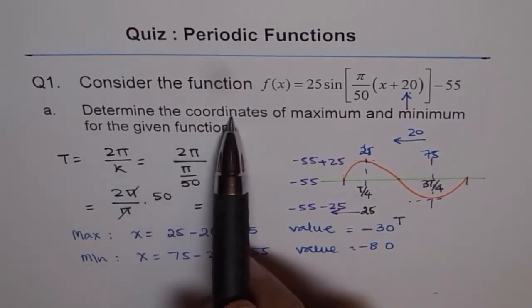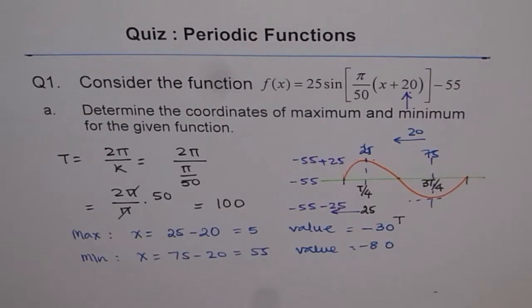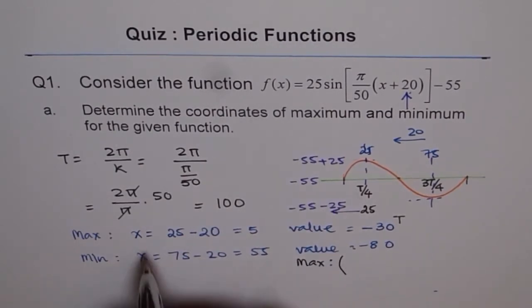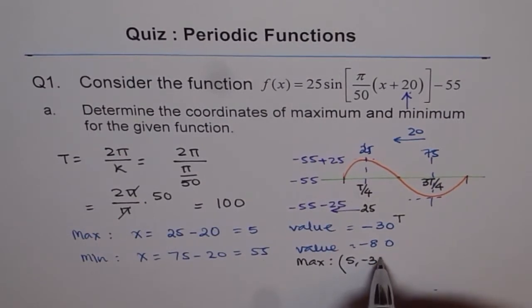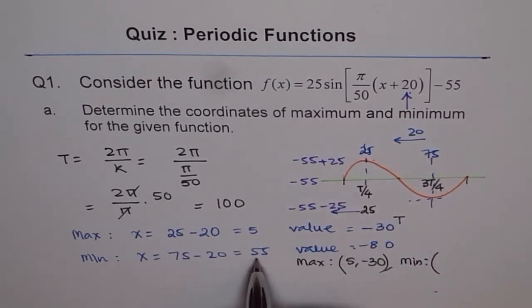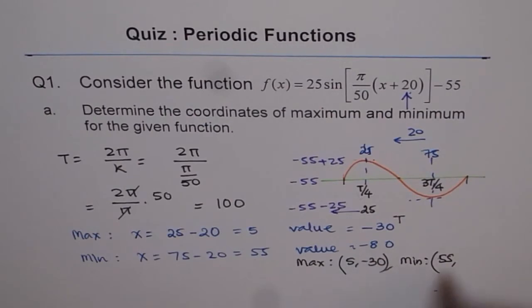And say, determine the coordinates of maximum and minimum for the given function. So our coordinates for maximum and minimum are: Maximum, the coordinates are the x value is 5 and the y value is minus 30. And for minimum, the x value of 55 and minimum value of minus 80. So that is the solution of part A.